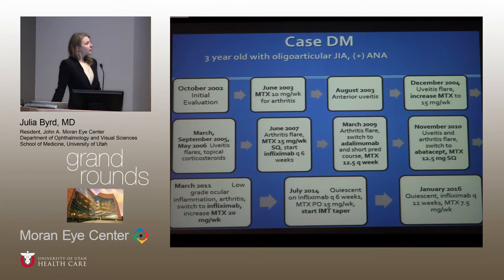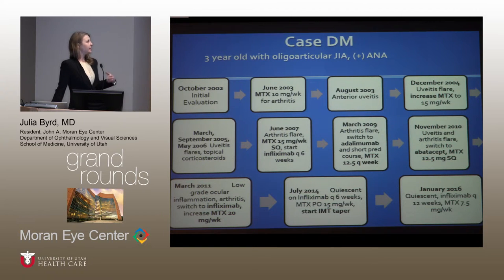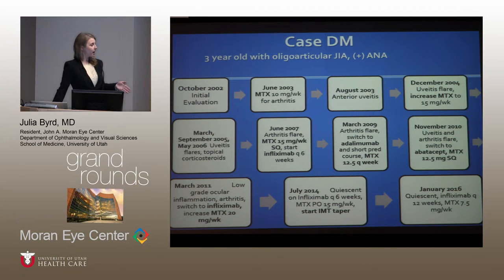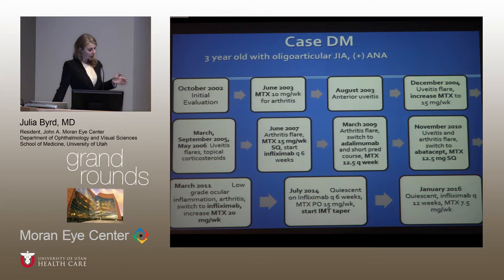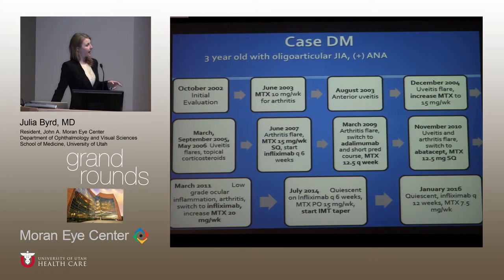Back to our patient: in December of 2004, he had another uveitis flare, and his methotrexate was increased to 15 milligrams a week. Over the next year and a half he continued to have uveitis flares, still on 15 milligrams per week of methotrexate, treated with topical corticosteroids, but things weren't as controlled as we would like. In June of 2007, he had an arthritis flare, so his methotrexate was switched to subcutaneous administration — still at 15 milligrams a week — and he was started on infliximab every six weeks.